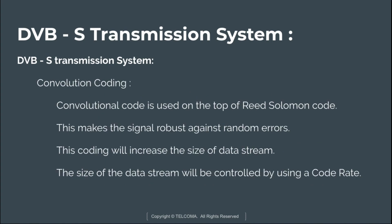Next is convolutional coding. The protection provided by Reed Solomon coding alone is not enough for digital signals, so convolutional coding is used on top of Reed Solomon coding. This makes the signal more robust against random errors, though it increases the size of the data stream. The size of the data stream is controlled using a code rate, which is the ratio between the data rate before and after the convolutional coder.